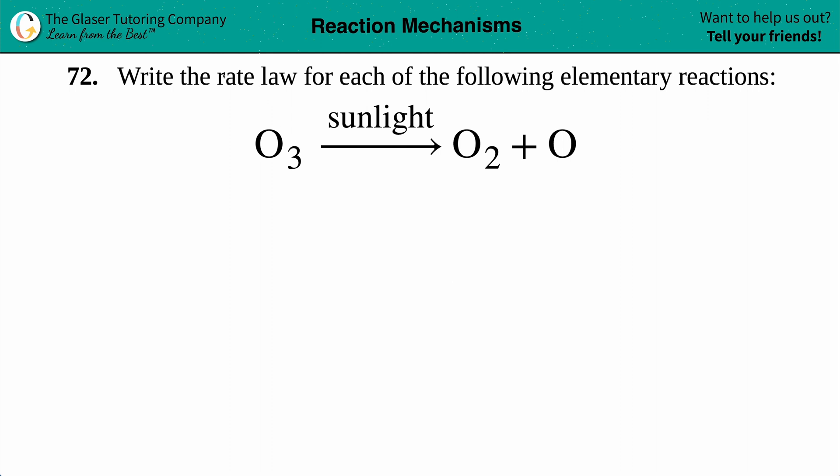Number 72: Write the rate law for each of the following elementary reactions. We have this equation here - ozone when hit with sunlight will give out O2 plus O.